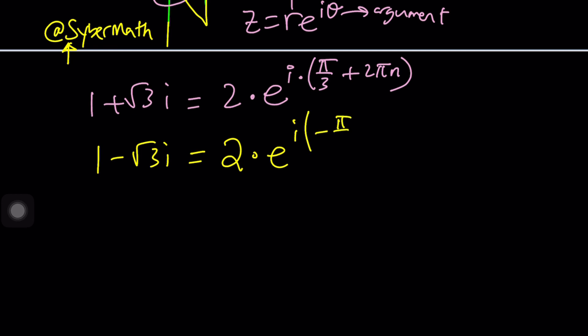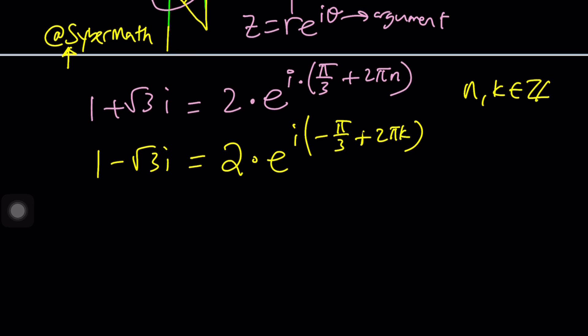So we can write this as -π/3 + 2πk but you don't have to use the same integer because you don't know if they're going to be the same, right? So let's use k instead. So n and k are integers. I think we already talked about it right?